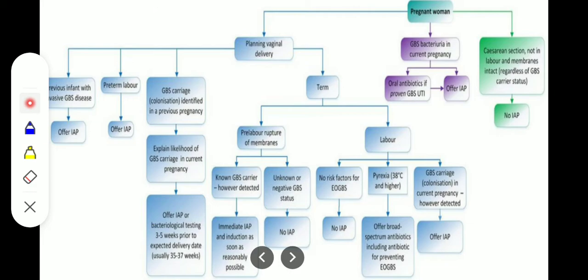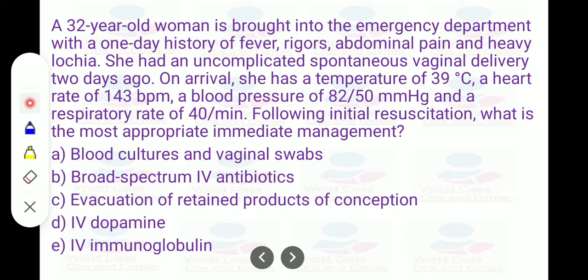Now coming to the exam question: a 32-year-old woman is brought into the emergency department with a one-day history of fever, rigors, abdominal pain, and heavy lochia. She had an uncomplicated spontaneous vaginal delivery two days ago. On arrival, she has a temperature of 39 degrees centigrade, heart rate of 143 per minute, blood pressure of 82/50 mmHg, and respiratory rate of 40 per minute.